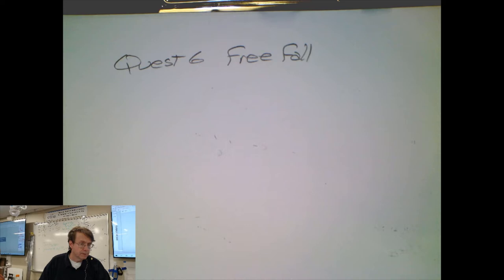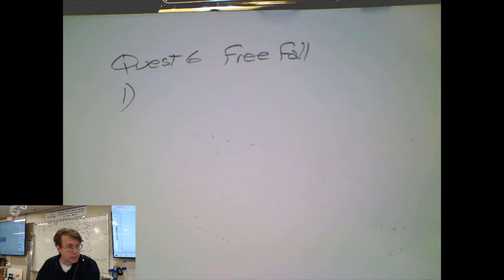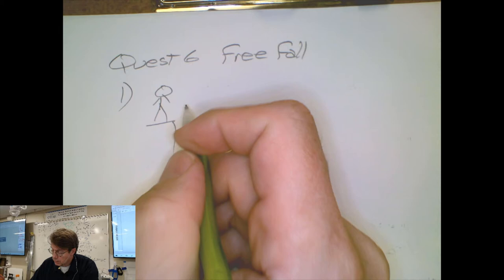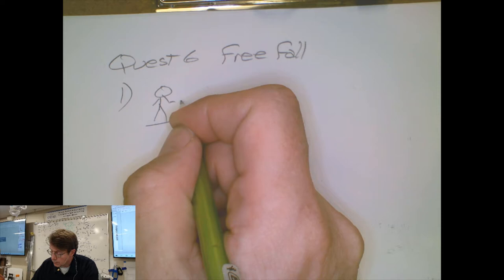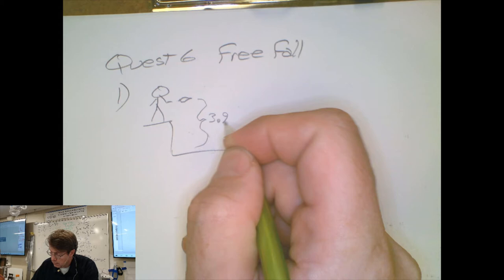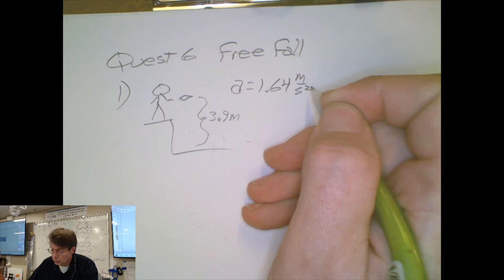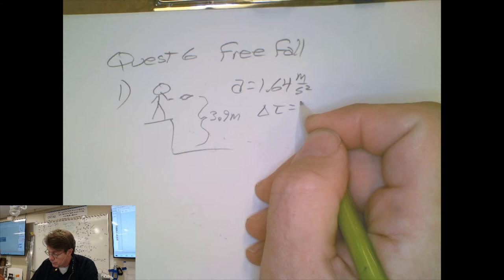This is an audio recording over the video for the Quest 6 free fall quest. I'm going to work through all of the problems and you can see the timestamps in the description. Problem number one: we have an astronaut dropping a feather from a height of 3.9 meters above the surface. It's on the moon and the acceleration on the moon is 1.64 meters per second squared. We're asked how long it will take to fall to the surface.